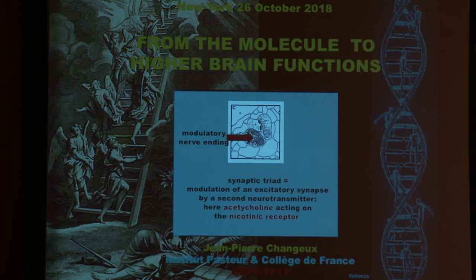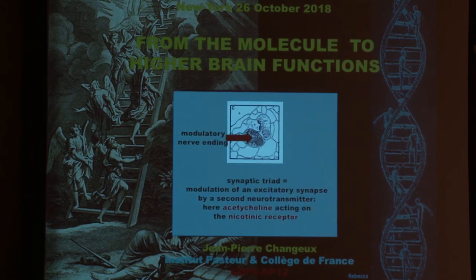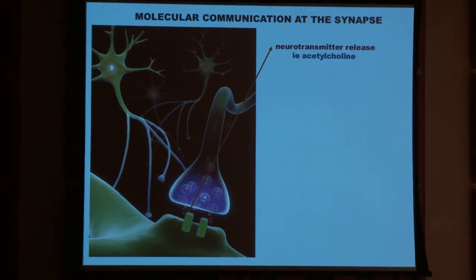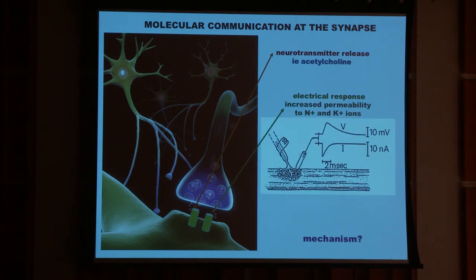And what I am going to talk about is another neurotransmitter, acetylcholine, acting on the nicotinic receptor. This is a very common neurotransmitter at the neuromuscular junction, and it is released at the chemical synapse, creates a change of electrical response, permeability to sodium and potassium ions.